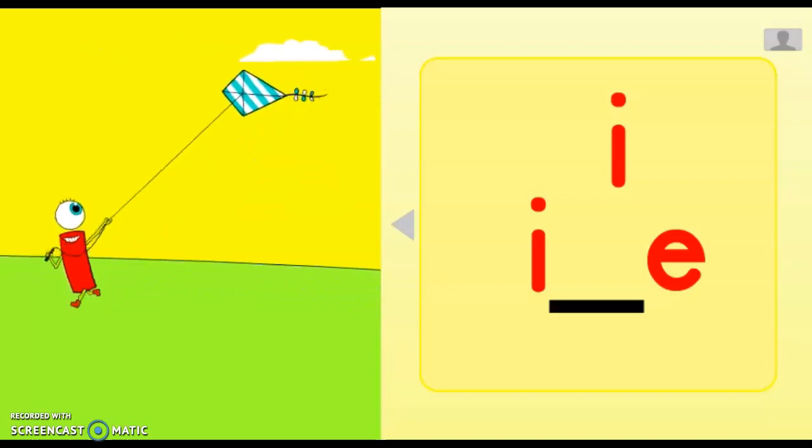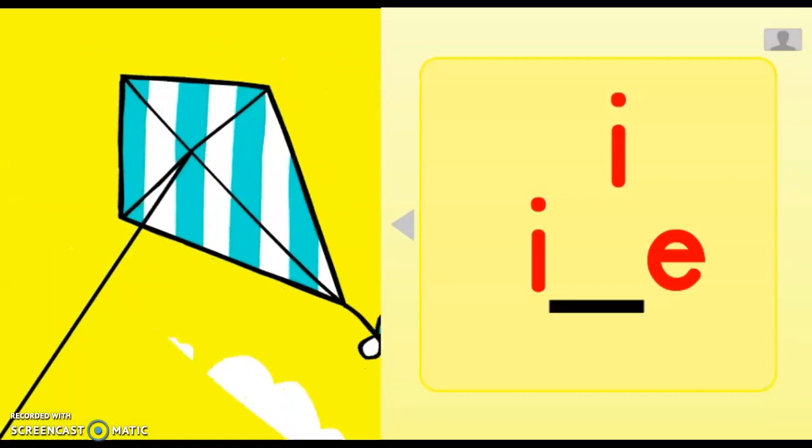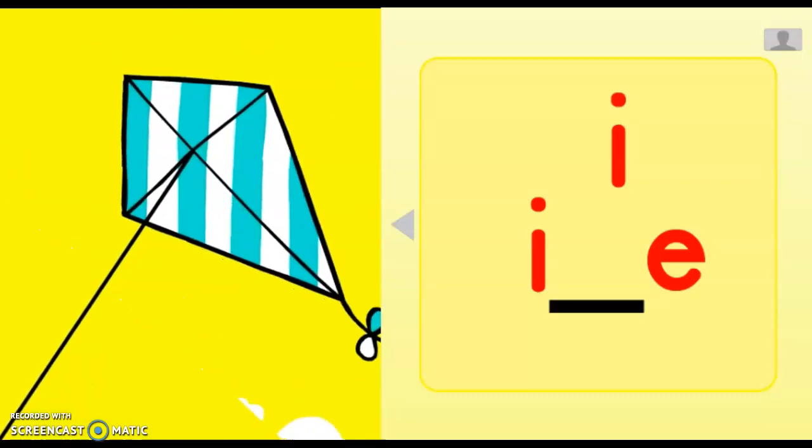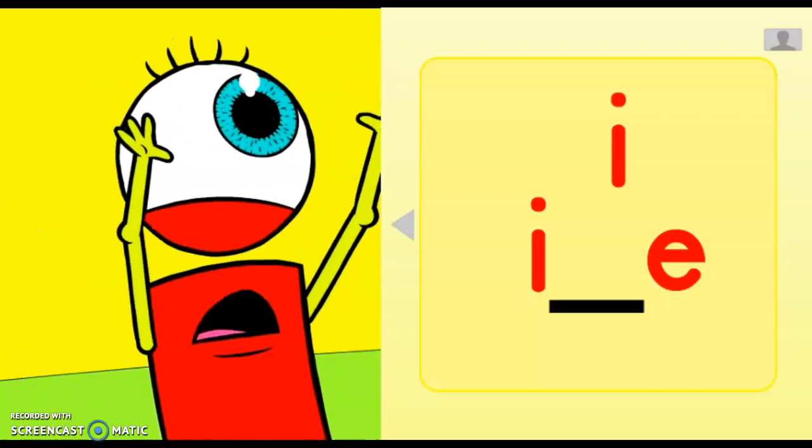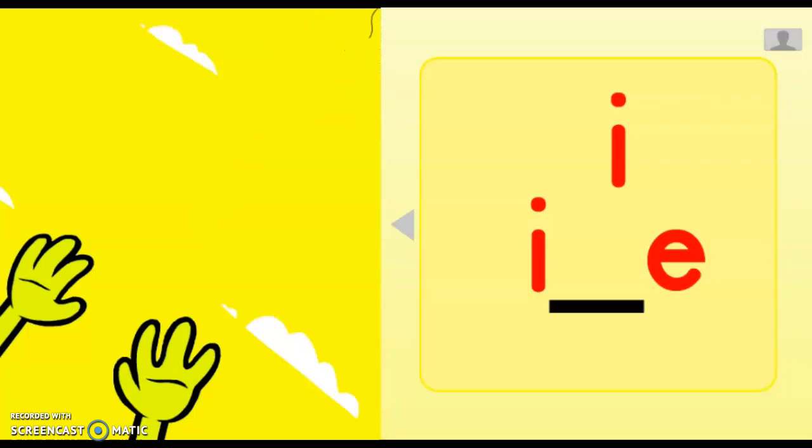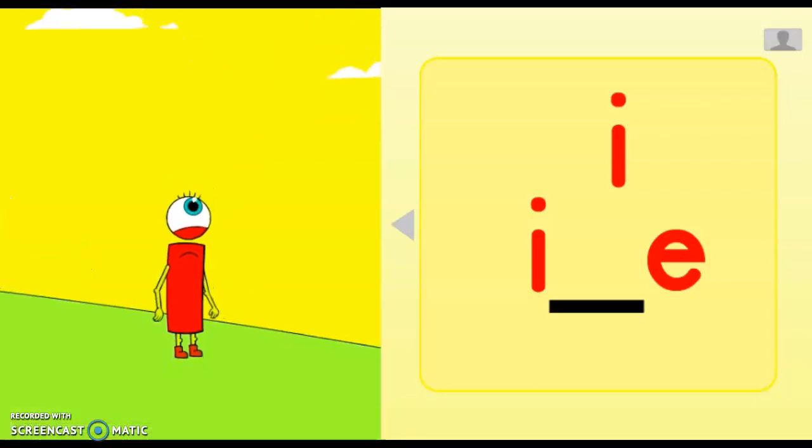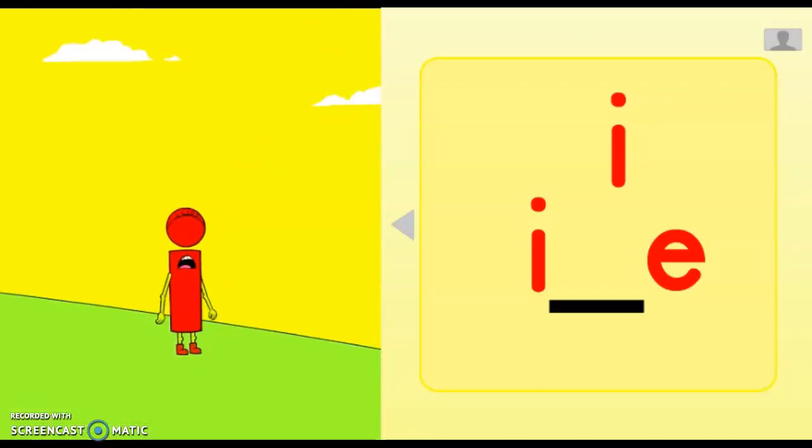Long Eye likes to fly his kite. Look at that striped kite fly. But Long Eye doesn't hold on tight. When the kite flies out of sight, he cries. Eye! Eye! Eye!